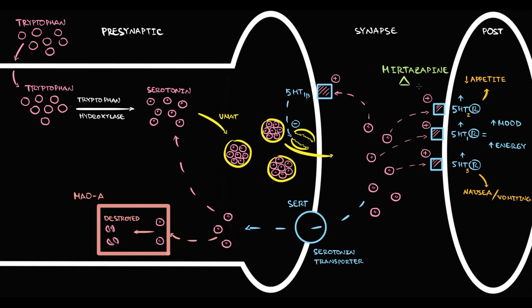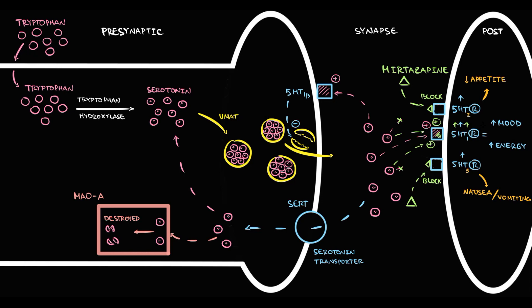Mirtazapine blocks both serotonin type 2 and serotonin type 3 receptors. With blockage, serotonin molecules cannot bind to these receptors, so these receptors cannot be activated. This also causes increasing free, unbound serotonin molecules in the synapse. Now these serotonin molecules will come to the only receptor available, which is the serotonin type 1 receptor. So the stimulation of serotonin type 1 receptor becomes even stronger, and because it is the major serotonin receptor involved in regulation of mood, mood becomes better and energy increases.